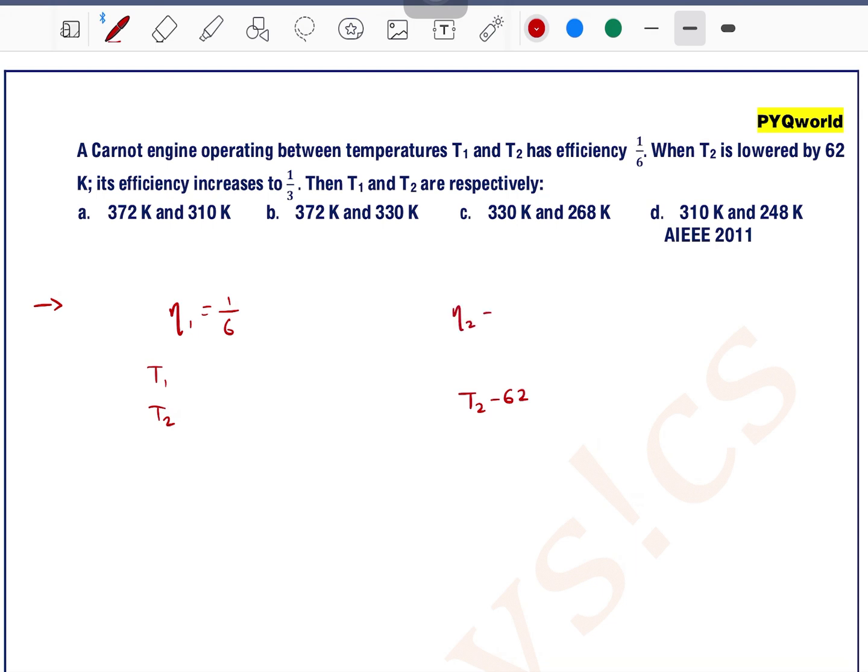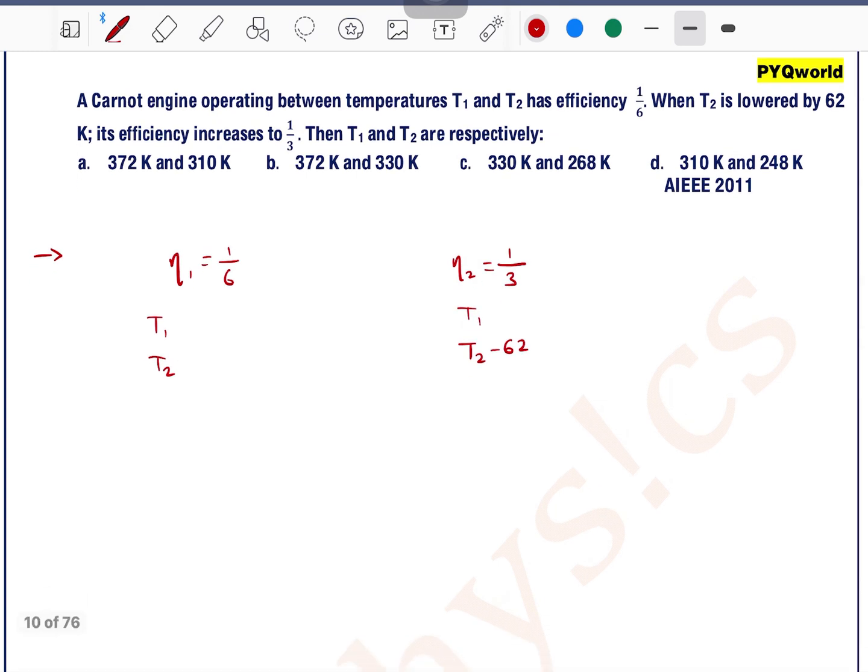it is saying that T2 is lowered by 62 Kelvin. So T2 becomes T2 minus 62. Its efficiency increases to 1 by 3. So this is 1 by 3. It gets doubled.